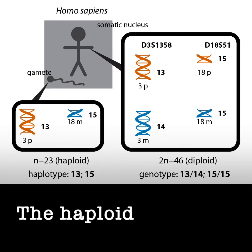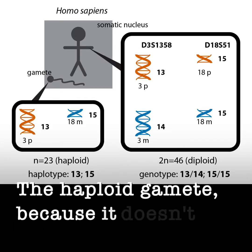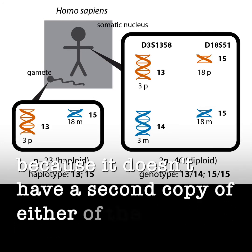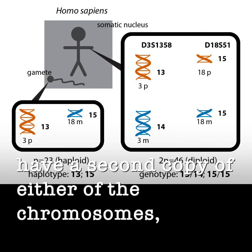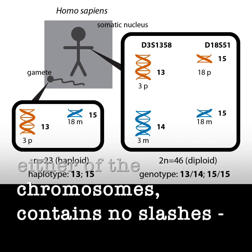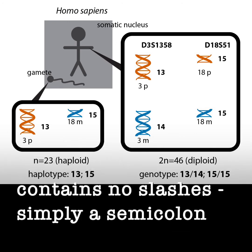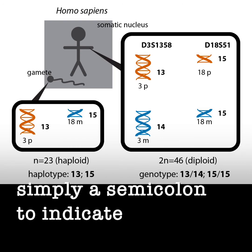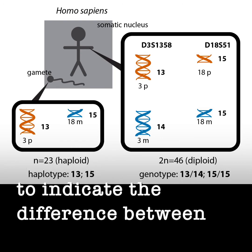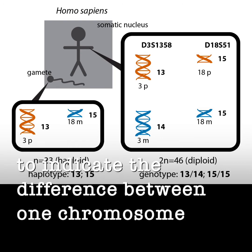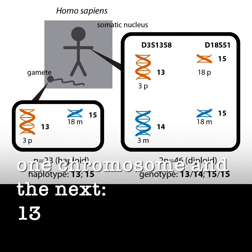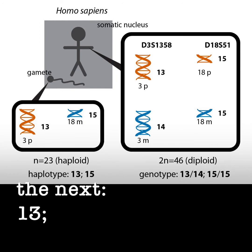The haploid gamete, because it doesn't have a second copy of either of the chromosomes, contains no slashes — simply a semicolon — to indicate the difference between one chromosome and the next: 13;15.